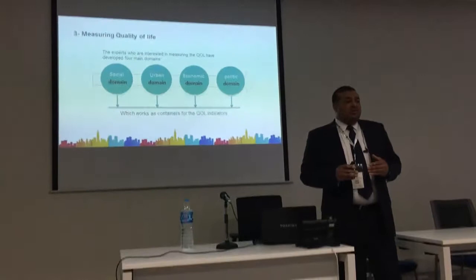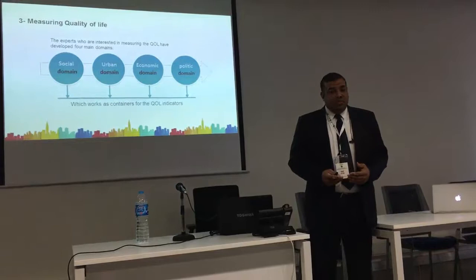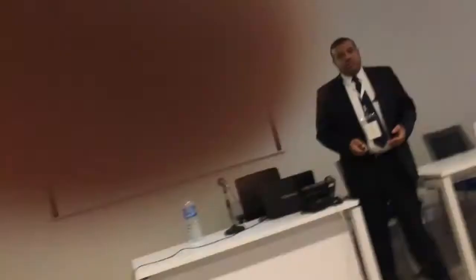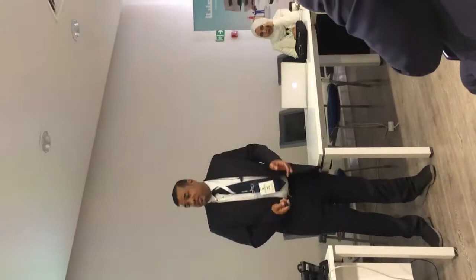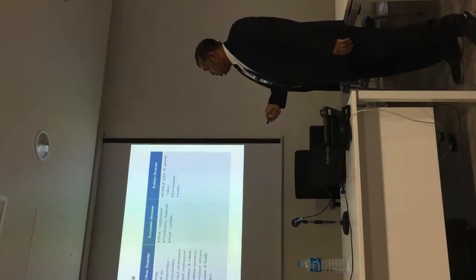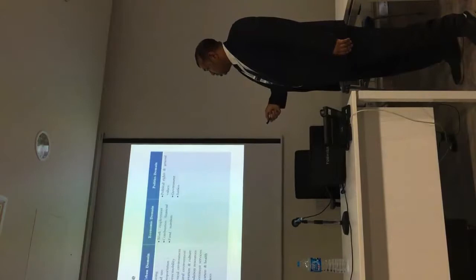These real and measurable indicators lead us to part three: measuring quality of life. The experts interested in measuring quality of life developed four main domains which work as a container for quality of life indicators. These domains are: the social domain, the urban domain, the economic domain, and the political domain. In this table we can see all domains with their indicators, and each indicator has a sub-indicator to be measured.